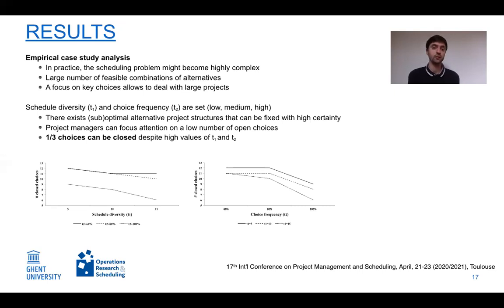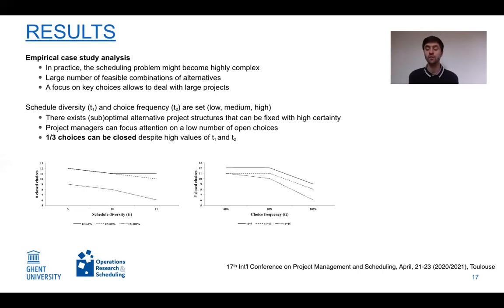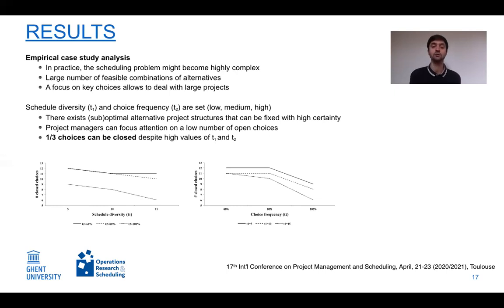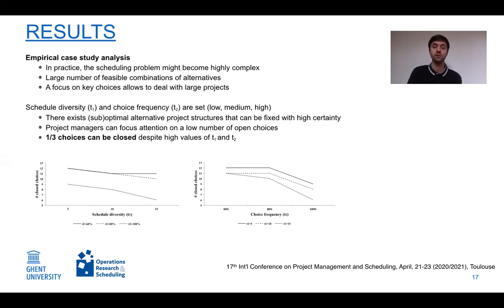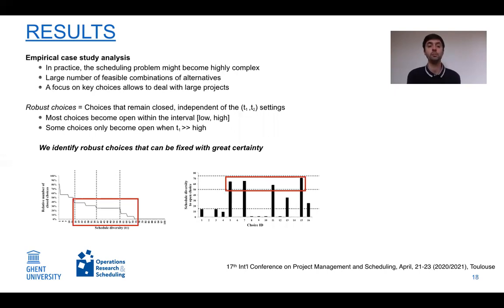When we increased schedule diversity T1 and choice frequency T2 from low to high values, the number of closed choices decreased as expected. However, we could still identify suboptimal alternative project structures fixable with high certainty, allowing project managers to focus on fewer open choices. Concretely, one out of three choices could be closed even for worst-case settings of T1 and T2.